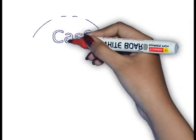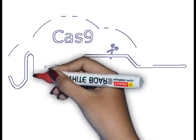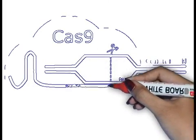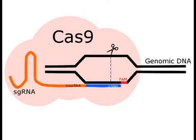CRISPR-associated protein 9, or Cas9, is an RNA-guided endonuclease that has revolutionized molecular biology by providing a simple yet effective method in genome editing. Utilizing only two components — a single guide RNA (sgRNA) and the Cas9 protein — it can effectively bind targeted genomic sequences and cleave double-stranded DNA.